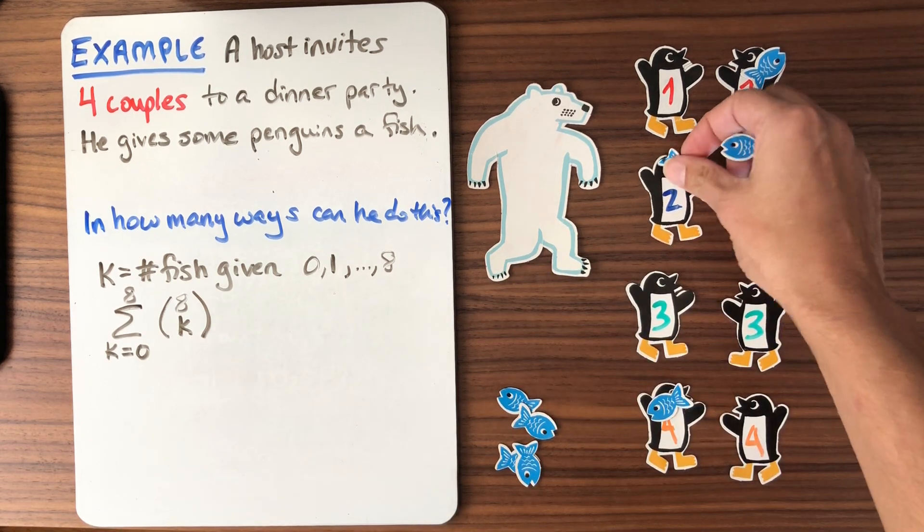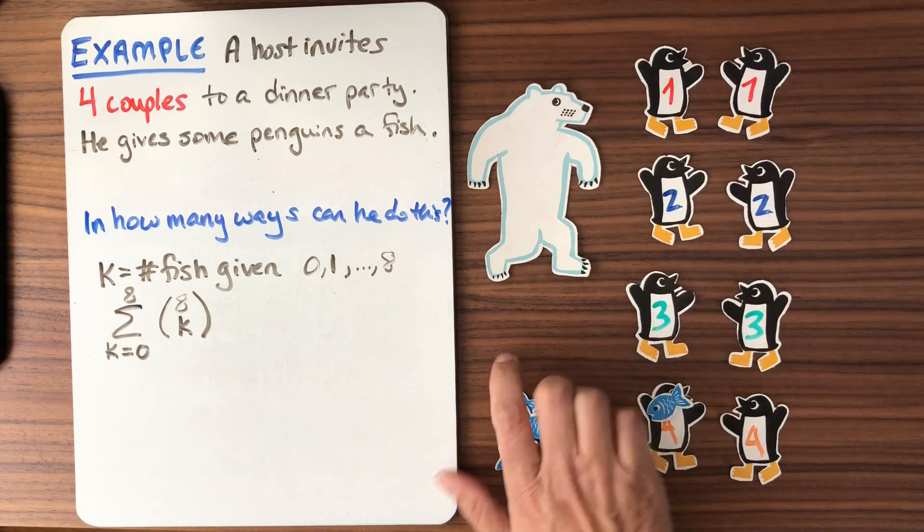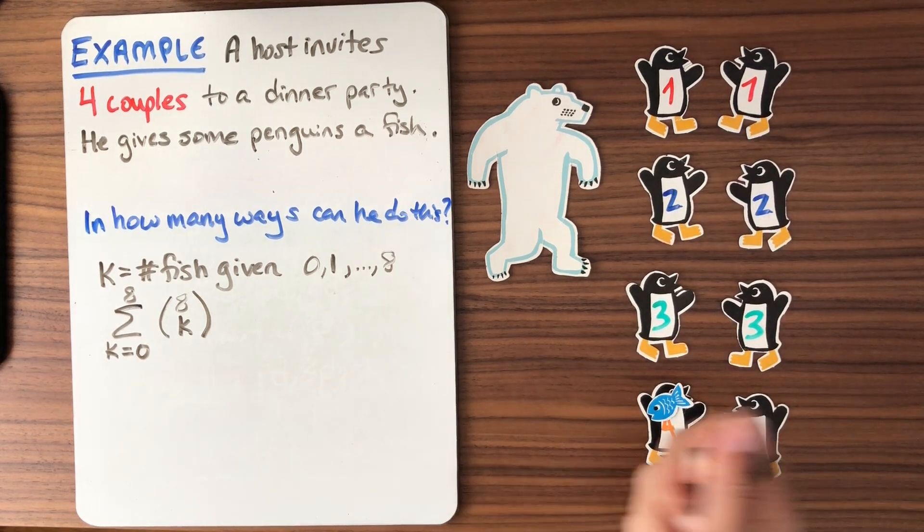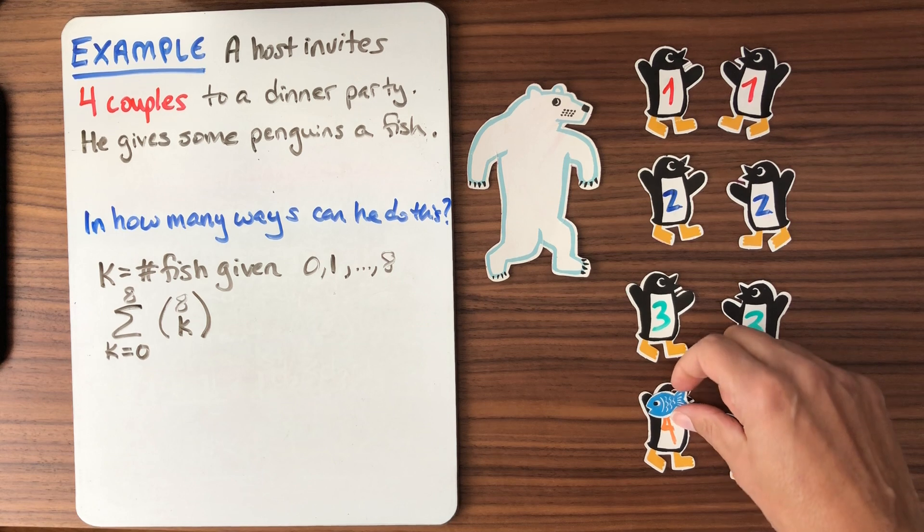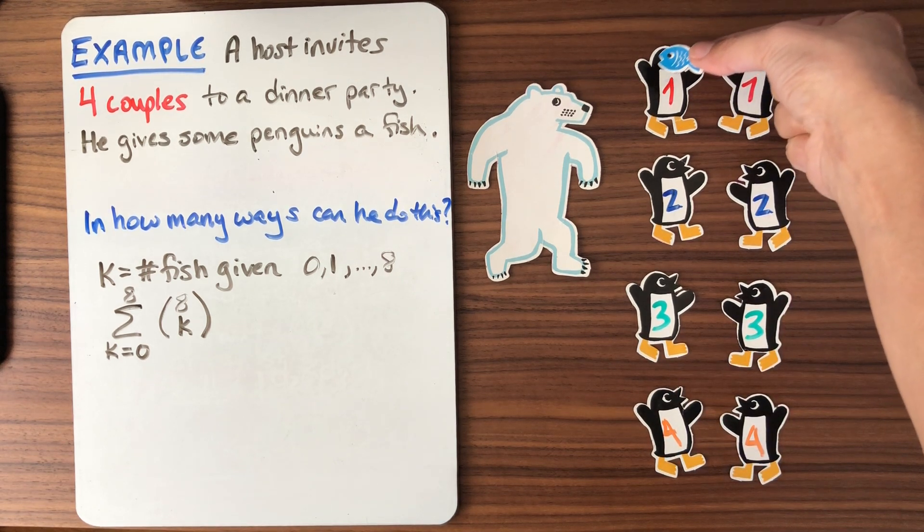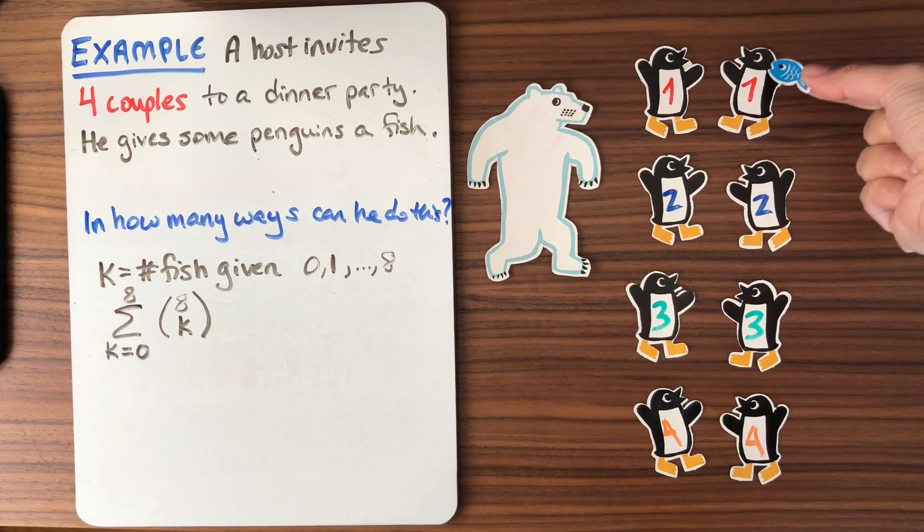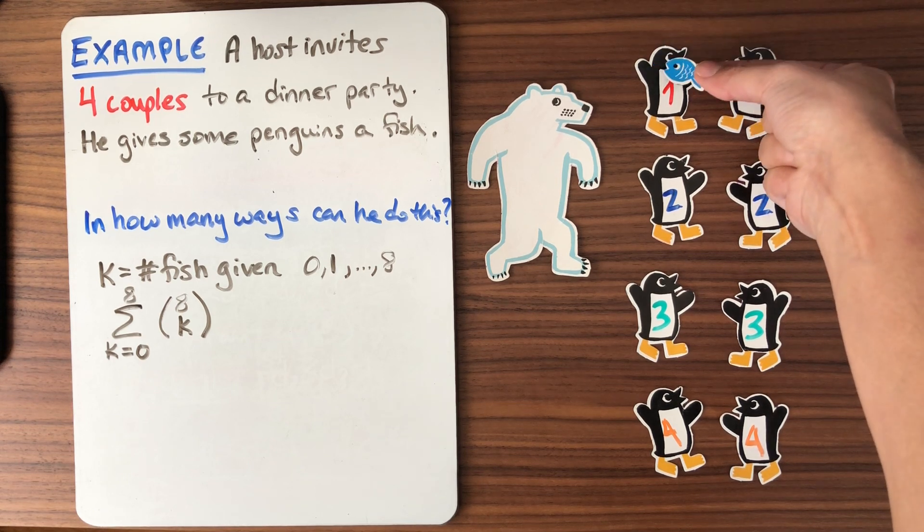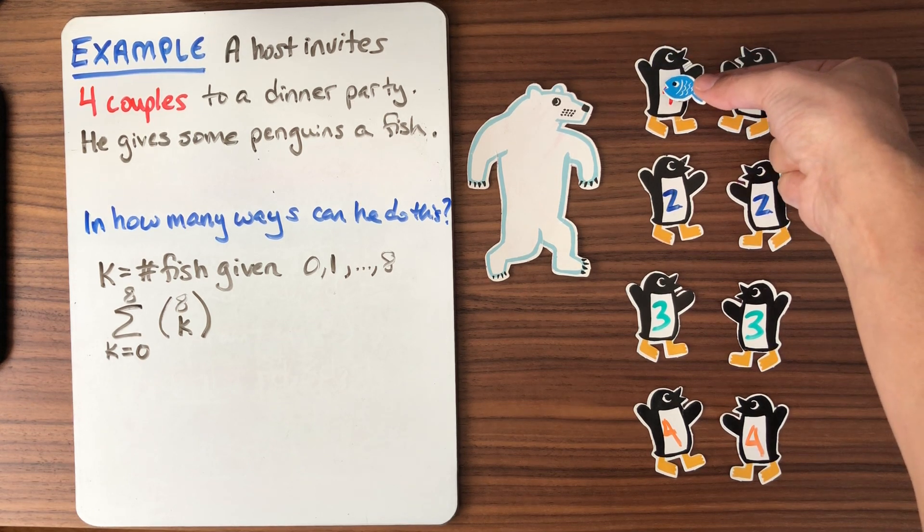Is he could just take all of the fish that he has in his hand. So take all, you know, eight possible fish, whatever. Suppose he has an infinite number of fish. He's a very happy polar bear. And he can just go to each penguin and say, fish or no fish? Fish or no fish? So that means here I have two choices for the polar bear, right? To give the fish or not.